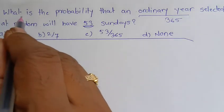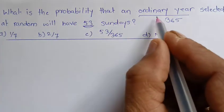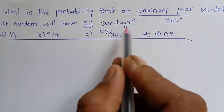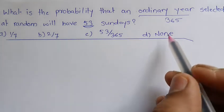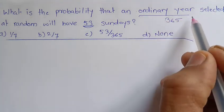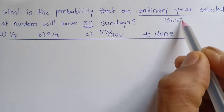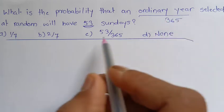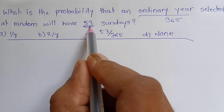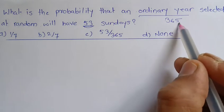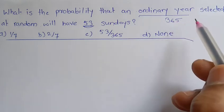The question is what is the probability that an ordinary year selected at random will have 53 Sundays? We know that in any ordinary year we have 365 days, so out of these 365 days they are asking for the probability of having 53 Sundays. Ordinary year has 365 days, and we'll have the concept of leap year also.